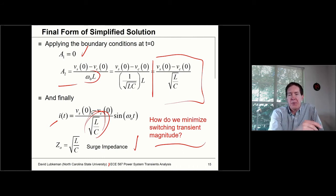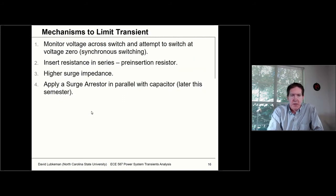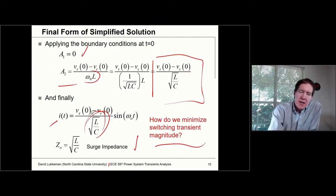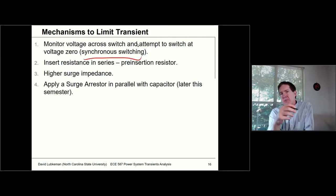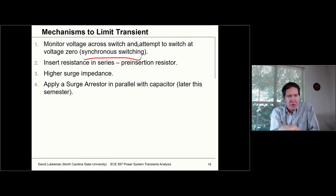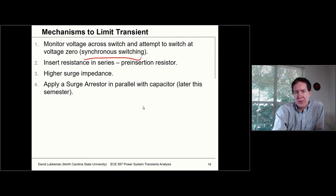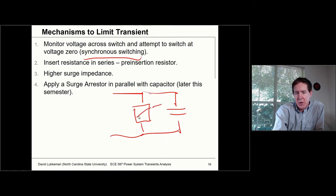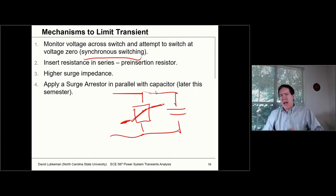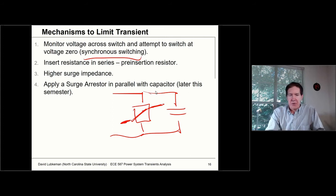There are several mitigation strategies. Synchronous switching monitors the voltage across the switch contacts and won't close until the voltage differential is close to zero — special types of capacitor switches do this. We can also put a resistance in series, or use a higher surge impedance. Another option is to put a surge arrestor across the capacitor — a nonlinear device that short-circuits to prevent excessively high voltages across the capacitor. That would be another action: putting a surge suppressor in the circuit.